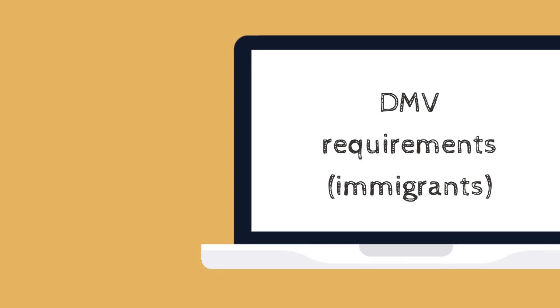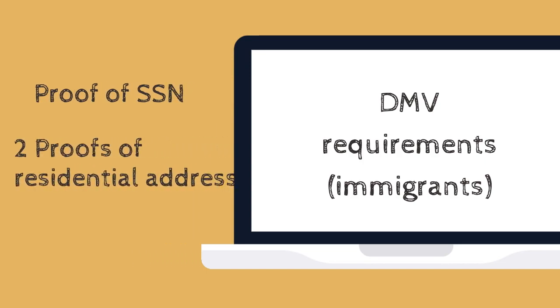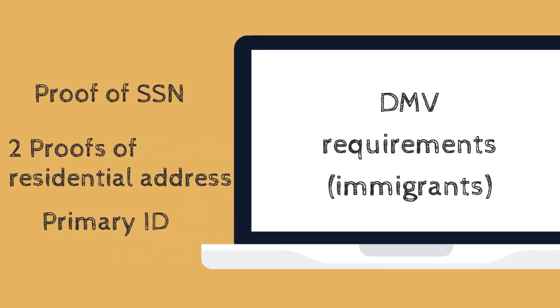Currently, DMV requires three types of documents which include proof of social security number, two proofs of residential address, and primary identification.